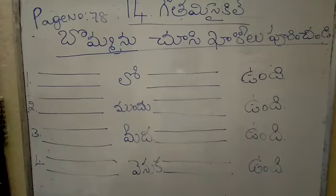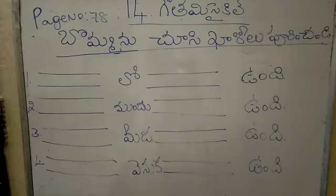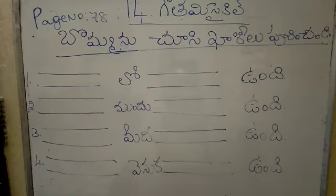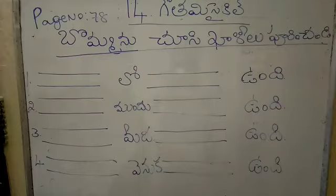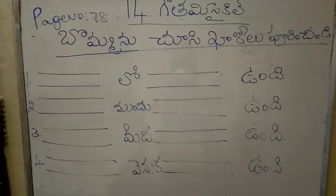Low means in. Mundu means front. Mida means on. Venukai means behind. See, children: low, mundu, mida, venukai. I will write the English meaning also.